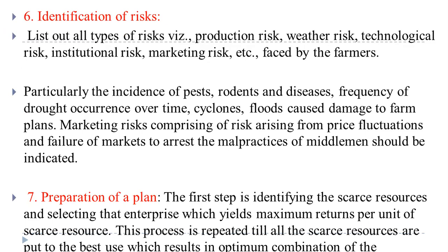Step 6 is identification of risk. Different types of risk include production risk, weather risk, technological risk, institutional risk, and marketing risk. Risks also arise from pests, rodents, diseases, drought, cyclone, and flood. Marketing risk involves price fluctuations, failure of market, and malpractices of middlemen — all of these must be identified and planned for.